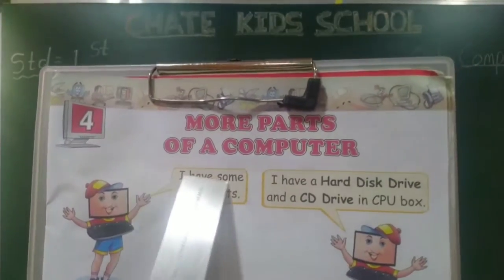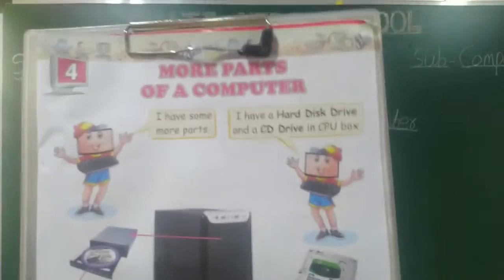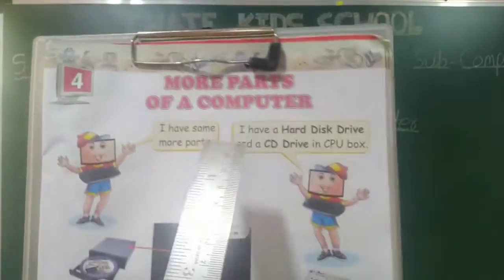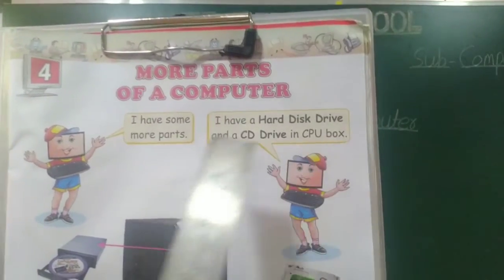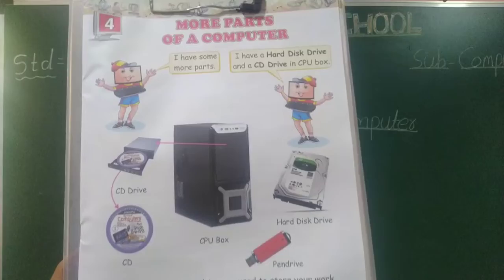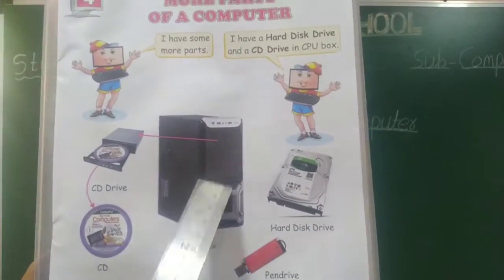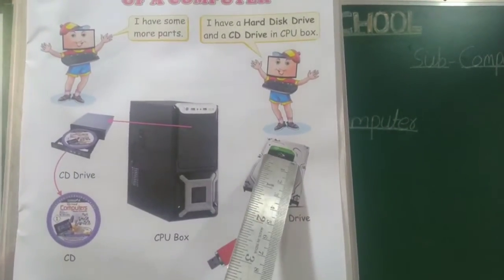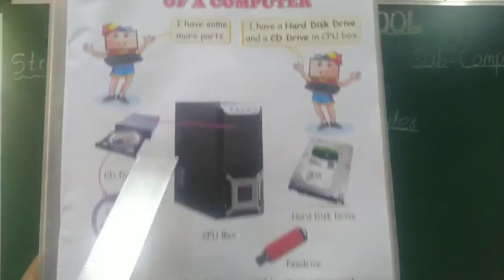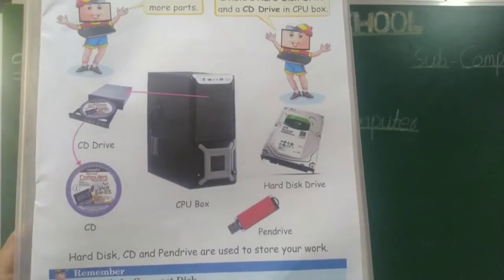I have some more parts to learn about a computer. I have a hard disk drive and CD drive in the CPU box. This is a CPU box, this is a hard disk device, CD drive, this is a CD, and this is a pen drive.